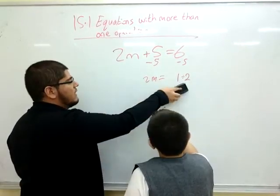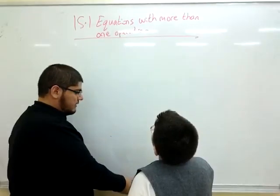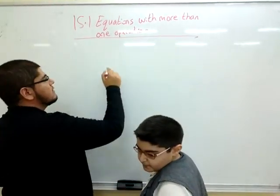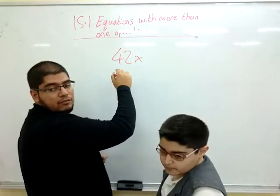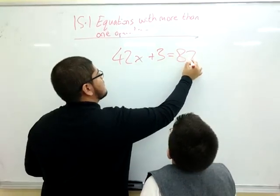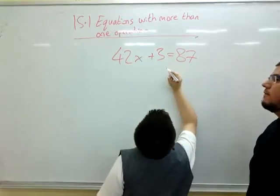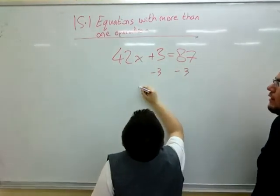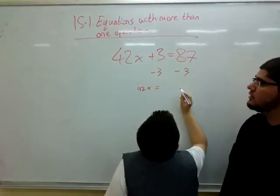So, I'm going to give you another example now, and then we're going to swap places. 42x plus 3 equals 87. Do the first step for us. Minus 3. So subtracting 3 on both sides, that's what you're saying we're going to do first.